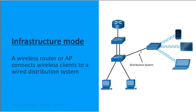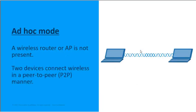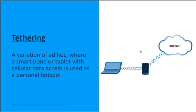In ad hoc mode, it's much more basic — we're talking peer-to-peer. We've got two devices connecting wirelessly without any network infrastructure, without any wired distribution system. A good example would be two phones directly connected to each other, maybe sharing a file using technologies like Bluetooth or AirDrop, with 802.11 coming into play. That's ad hoc — no infrastructure device, it's directly device-to-device.